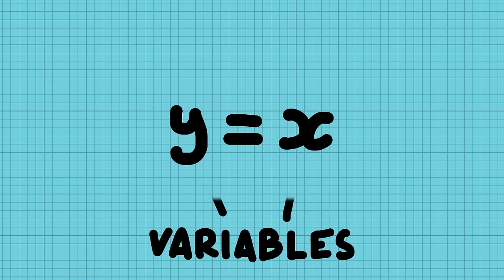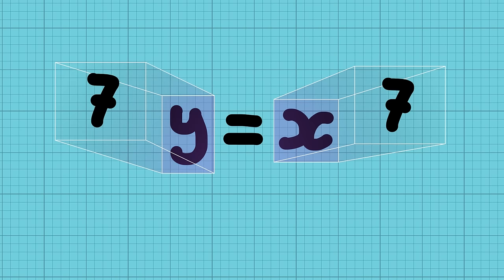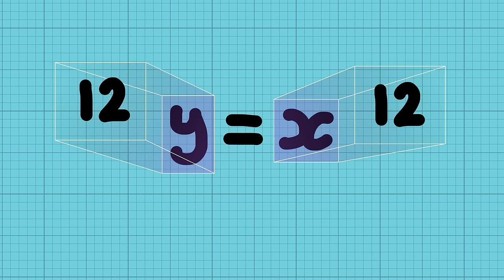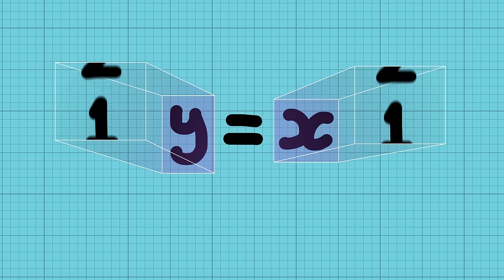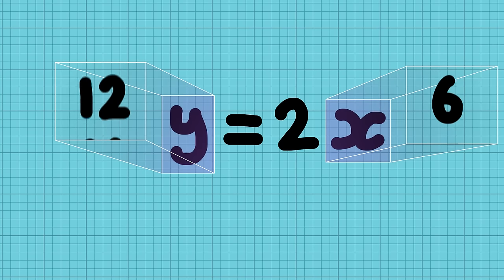These letters are the variables and are stand-ins for numbers. You can put any number into them but the equation fixes what the other numbers can be. For example, y equals x means that the numbers in y and x have to be the same, but in y equals 2x the number in y has to be double whatever the number in x is.